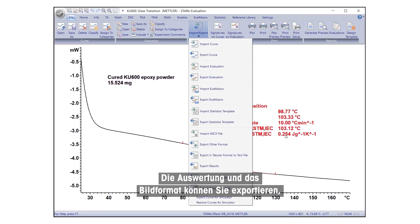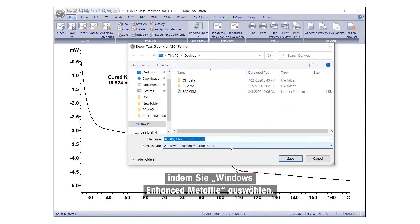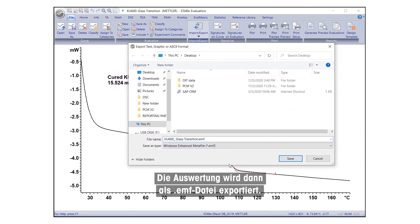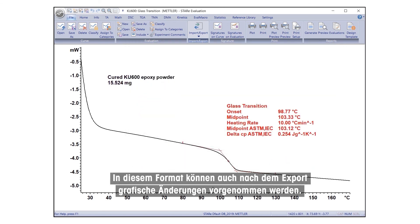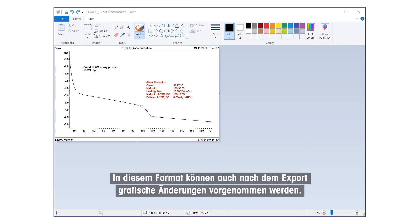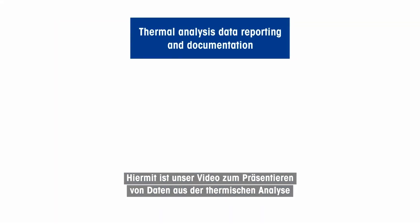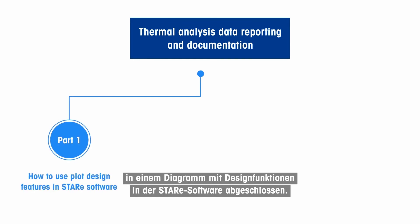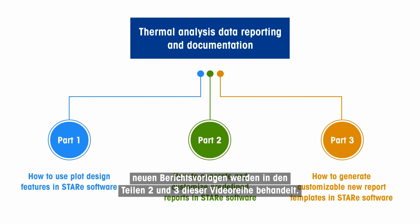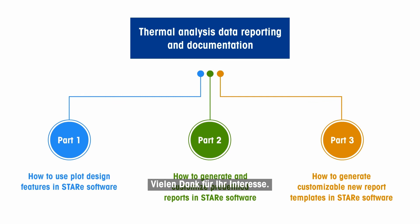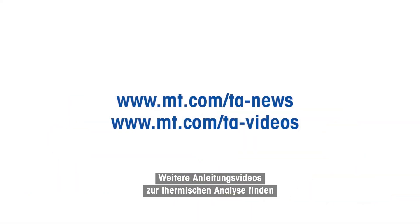One can export the evaluation in image format by selecting Windows Enhanced Metafile. The evaluation will be exported as a .emf file. This format enables graphical changes to be made even after export. This concludes our video on how to present thermal analysis data in a plot using design features in the STAR-E Software. The procedures for customizing existing report templates or creating new report templates from scratch are covered in Parts 2 and 3 of this video series. For more thermal analysis related how-to videos, please visit www.mt.com.